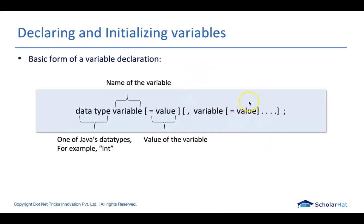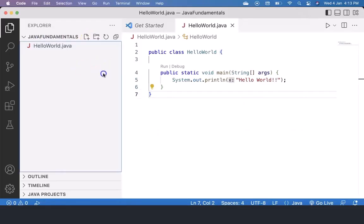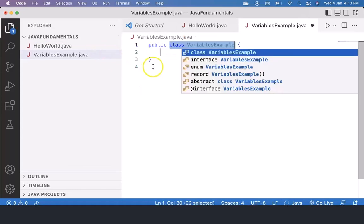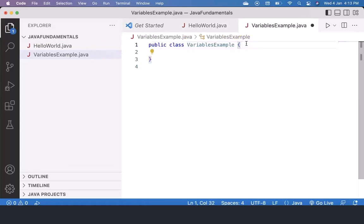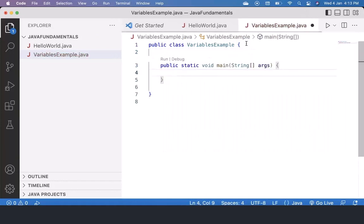Now let's try to understand how to declare, assign, and initialize variables in Java. Here I'm going to create a new file called VariablesExample. You can see that the class is generated. I'm going to add a main method here.